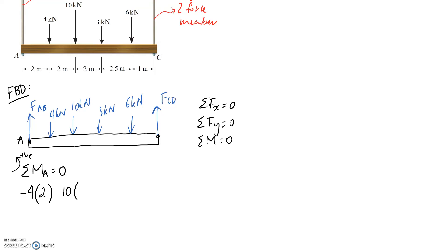Next we have the 10 kilonewtons acting at 4 meters from point A, again clockwise so negative. The 3 kilonewton force is at a distance of 6 meters from point A, again negative. The 6 kilonewton force is acting at 8.5 meters, again negative. Finally we have FCD acting at 9.5 meters, and it's anti-clockwise about point A so it's positive. We can solve for FCD and it comes out to be 12.32 kilonewtons.